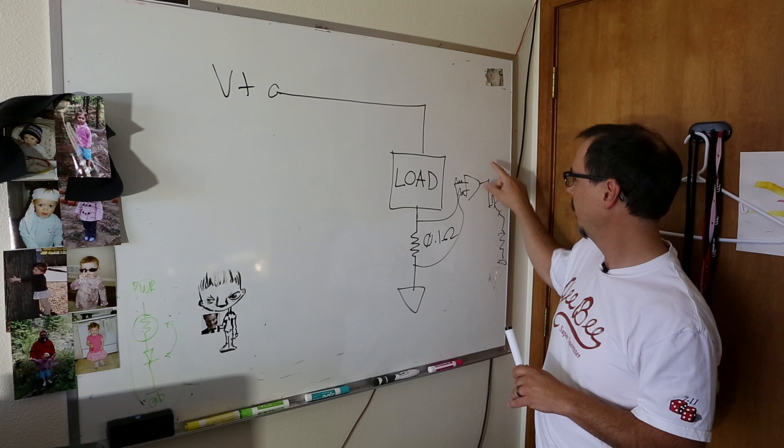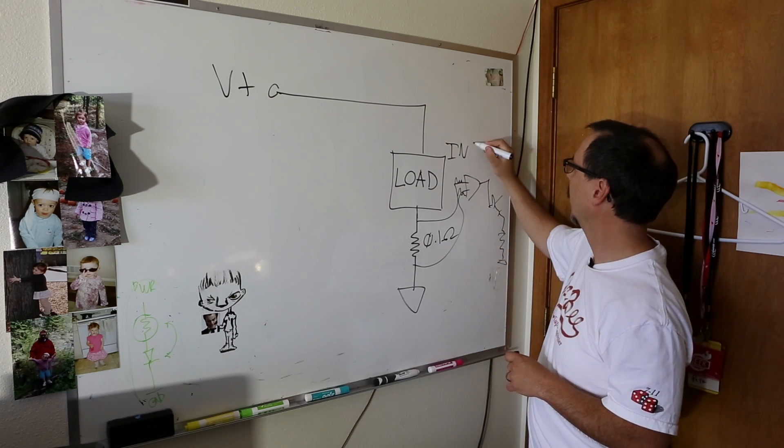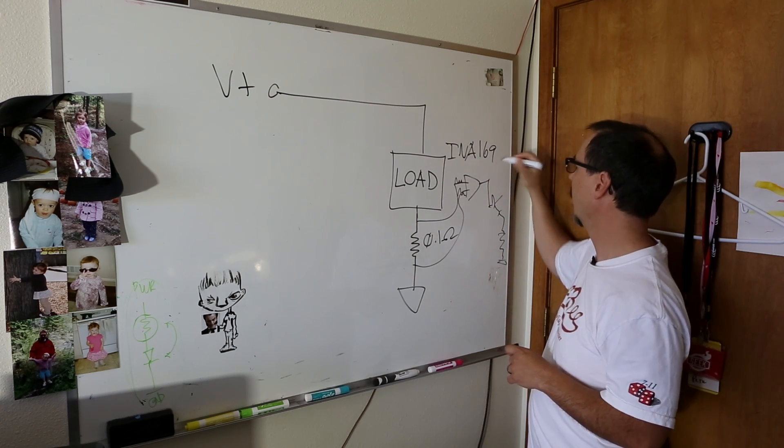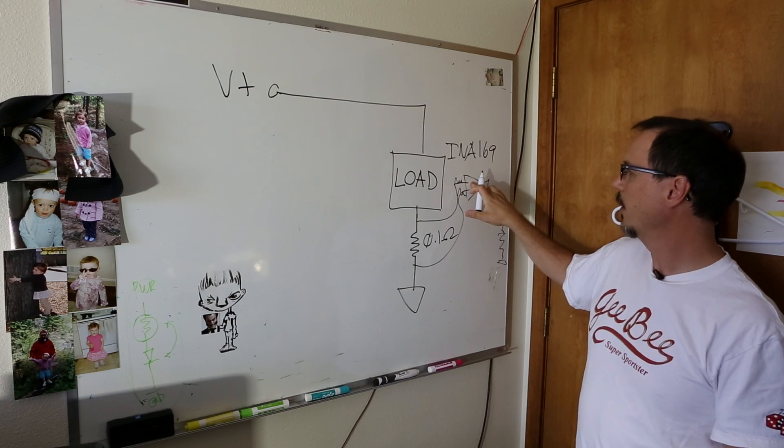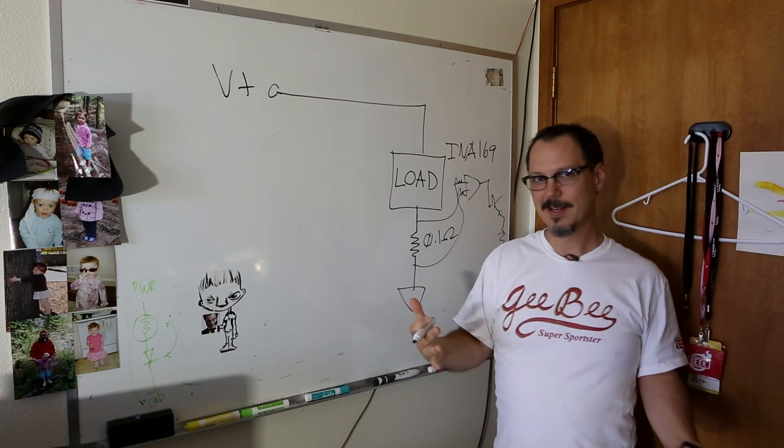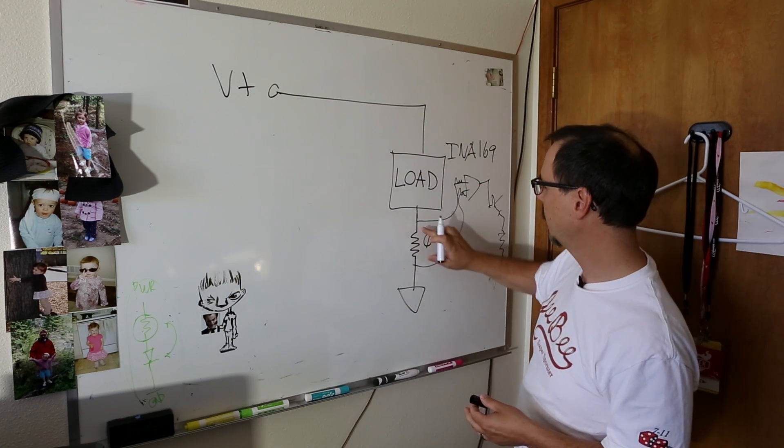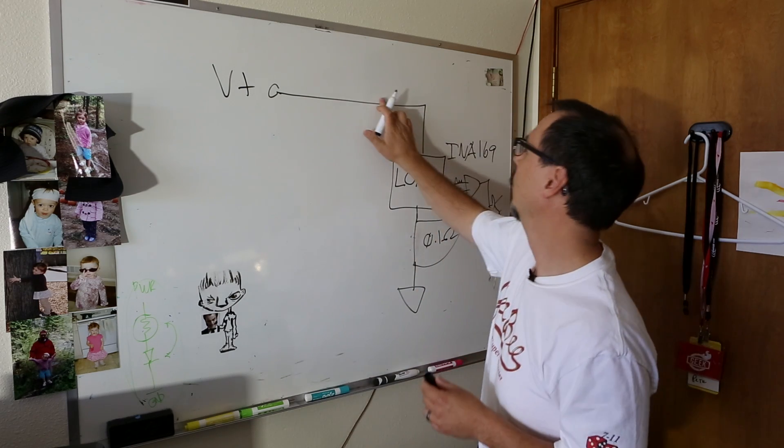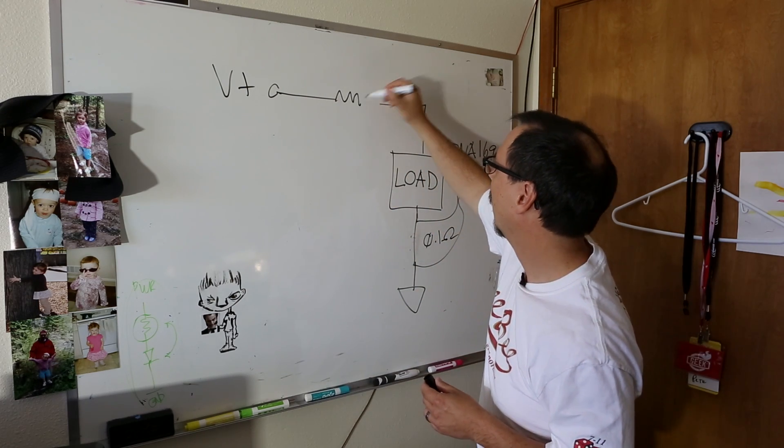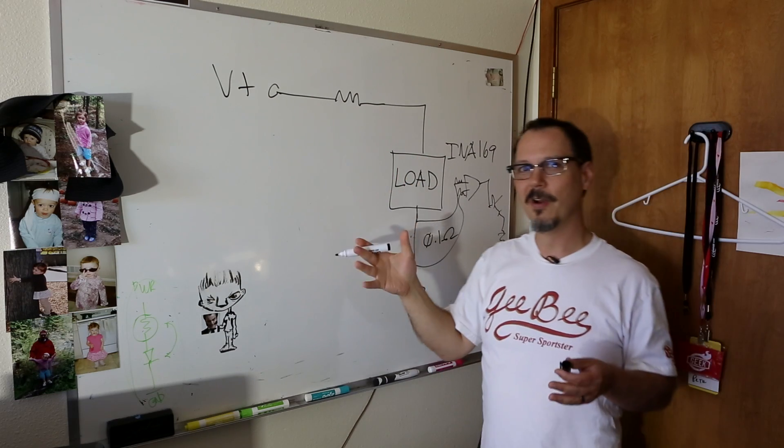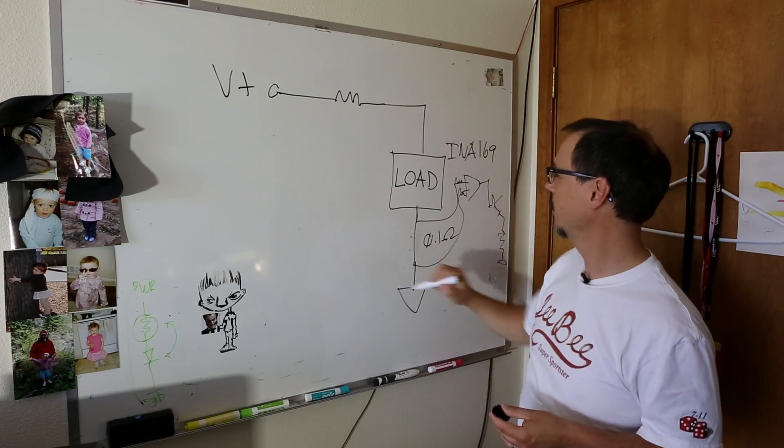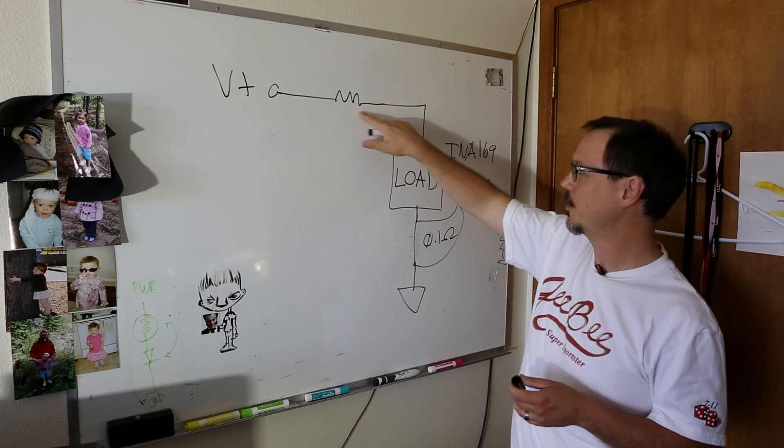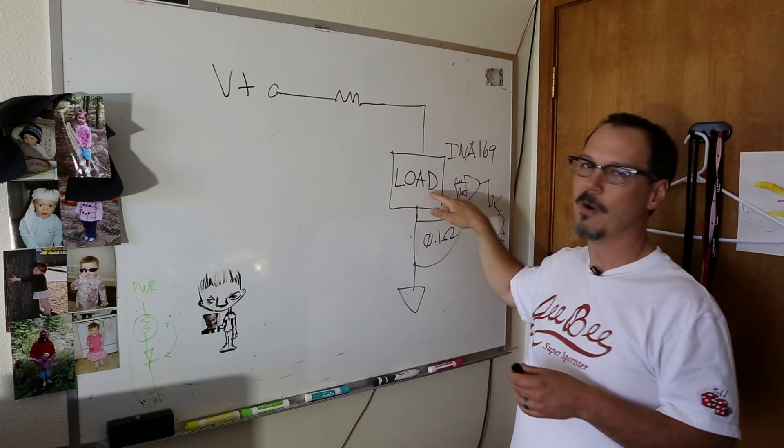Now, something also cool, and I'll write this down, INA-169. Another cool thing about this part is it's a high side sensor. What that means is that you don't have to put the resistor down here on the low side. You can put it up here on the high side. Now, that's cool and all. Problem is, this is still a series circuit. You're still going to introduce noise to your load.